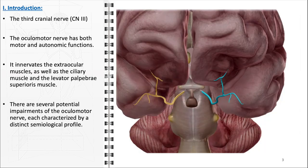Impairments of the oculomotor nerve can lead to various clinical manifestations, each with a distinct semiological profile. Common symptoms include diplopia due to uncoordinated eye movements, ptosis, and abnormalities in pupil size and reaction, such as a dilated pupil that does not constrict in response to light. These symptoms can arise from various causes, including trauma, vascular diseases, infections, or tumors compressing the nerve.